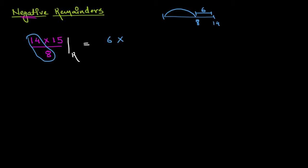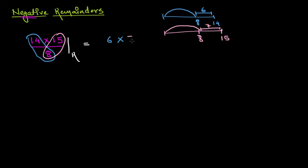So 6 multiplied by — now I'll divide 15 by 8. 15 is somewhat further along; I'll reach 8, but in order to reach 15, I'm still lacking 7. So 7 will be my remainder. Now I'll multiply: 6 times 7 is 42, but 42 is still greater than 8, so this won't be my remainder yet.